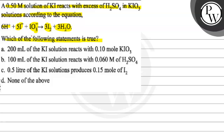Which of the following statements is true? Option A: 200 ml of KI solution reacts with 0.1 mol of KIO3. Option B: 100 ml of KI solution reacts with 0.060 molar of H2SO4. Option C: 0.5 liter of KI solution produces 0.15 mol of I2. Option D: none of the above.